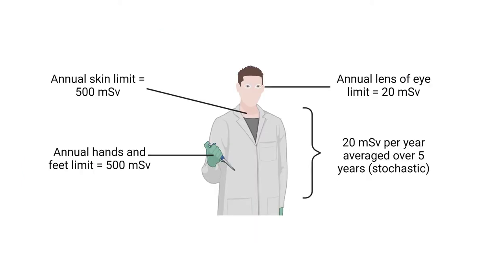The annual skin limit for exposure is 500 millisieverts. The annual hands and feet limit is also 500 millisieverts. The lens of the eye was decreased to 20 millisieverts, and the whole body exposure is 20 millisieverts averaged over five years. Of particular interest to me is the eye exposure because long-term exposure can lead to cataracts and related effects, which I've seen in some of my colleagues. So it's better to always work behind lead shielding and perhaps get appropriate lead glasses.